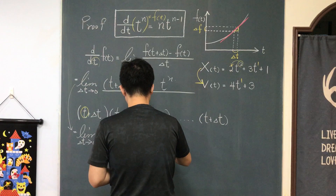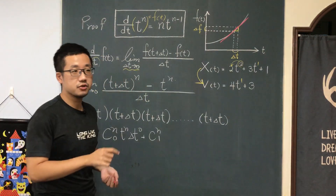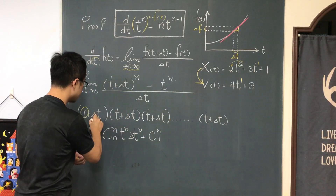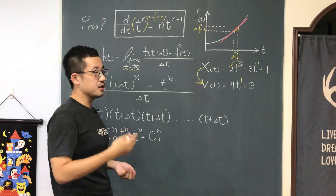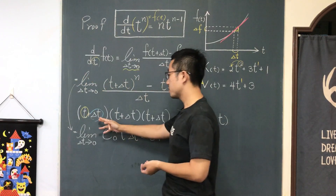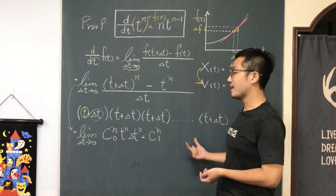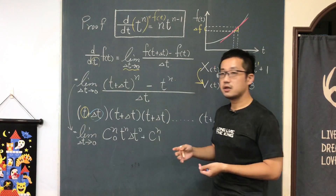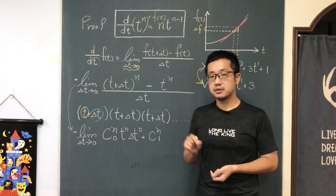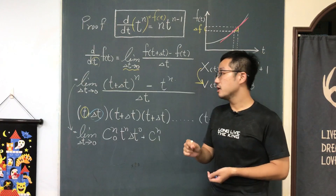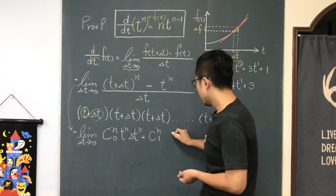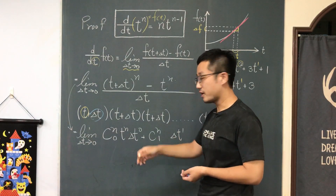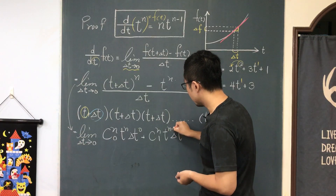Plus n choose 1: I'm going to choose 1 delta t from all of them. I don't know where it might be coming from — it could be from the first, second, third, or even the last term. The number of choices is n choose 1, times delta t to the first power. For the rest, it would be t to the n minus 1.